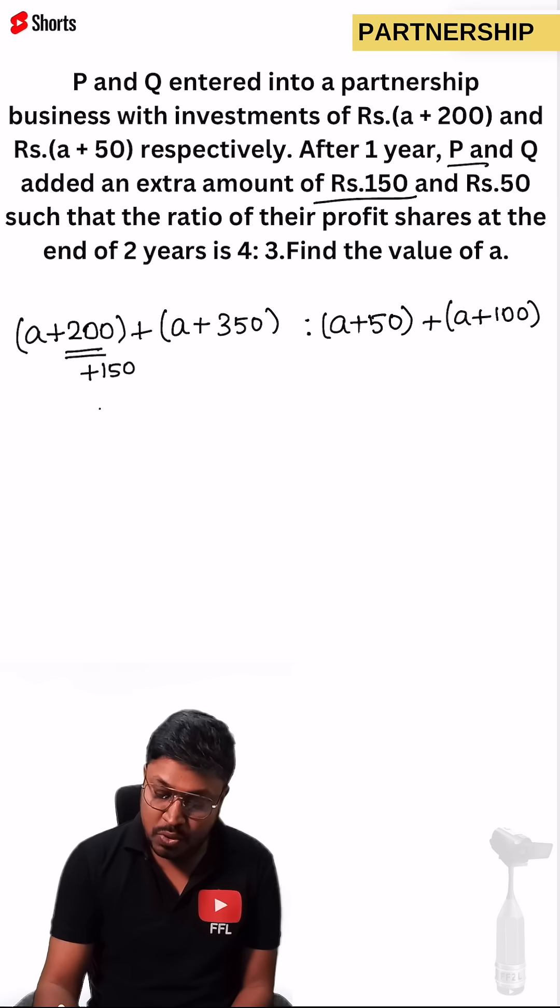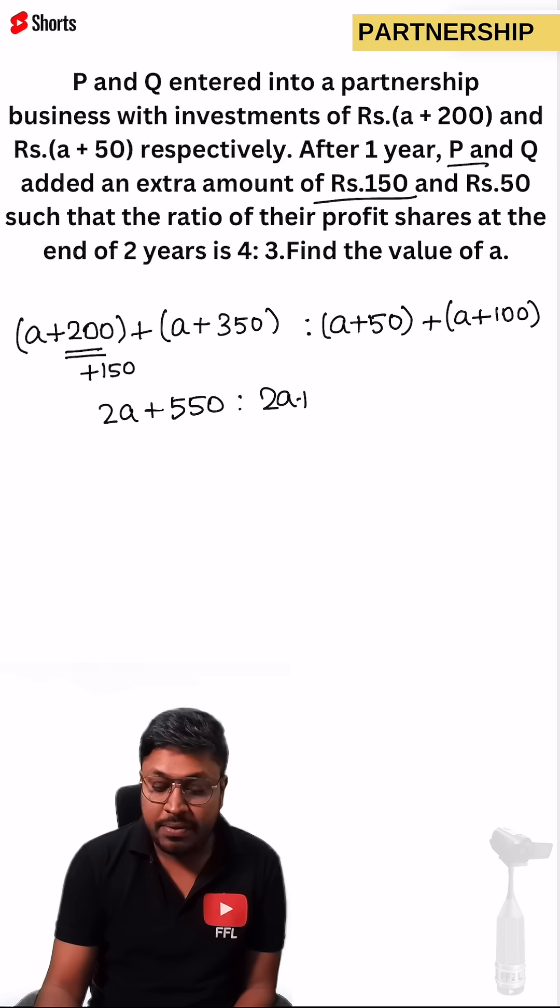So now this can be written as 2A plus 550 ratio 2A plus 150.